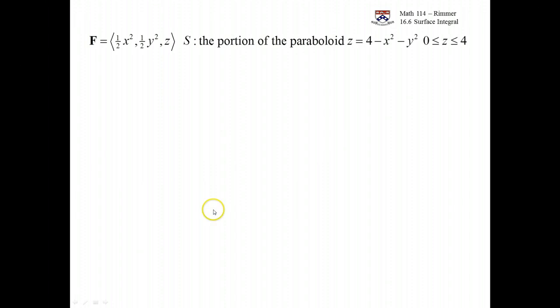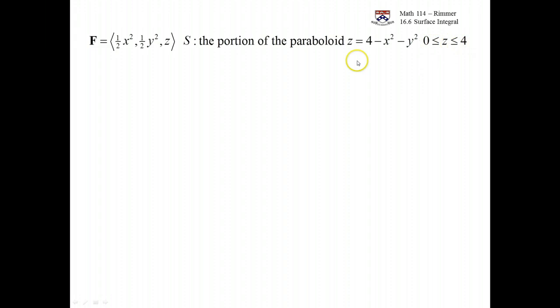Here's an example. I have this vector field: half x squared in the i component, half y squared in the j component, and z in the k component. I want to calculate the flux of this vector field through the surface. The surface is a paraboloid — a bowl shape that opens downward, reaches height 4 on the z-axis, and goes all the way down to the x, y plane, with z between 0 and 4.